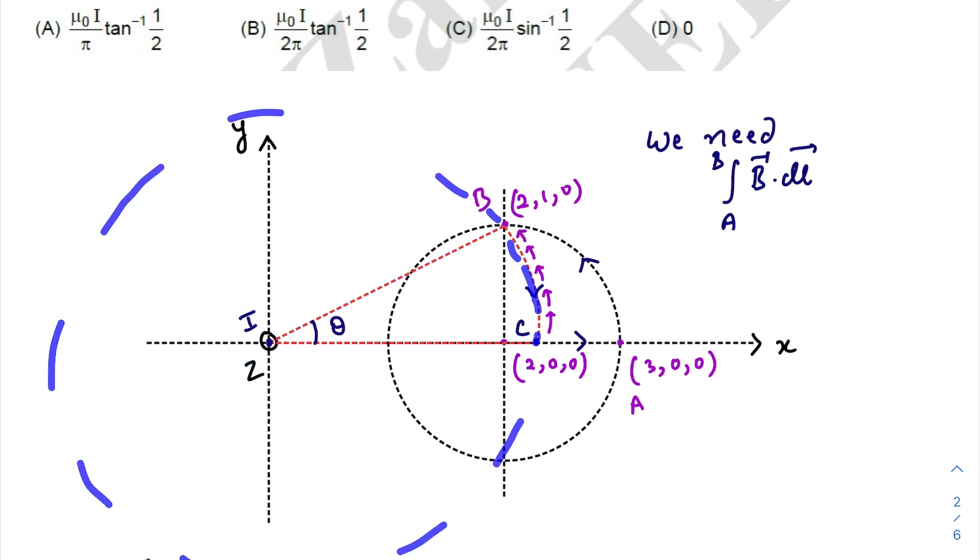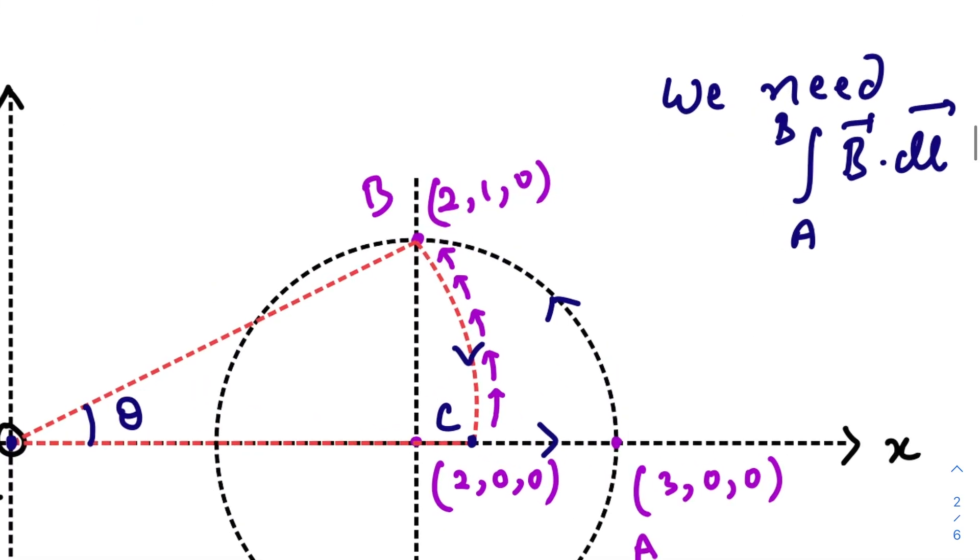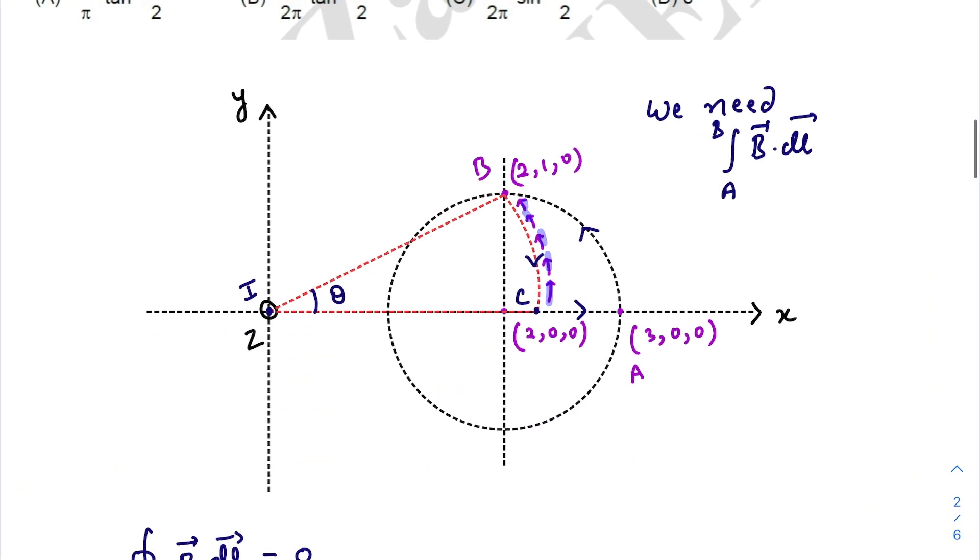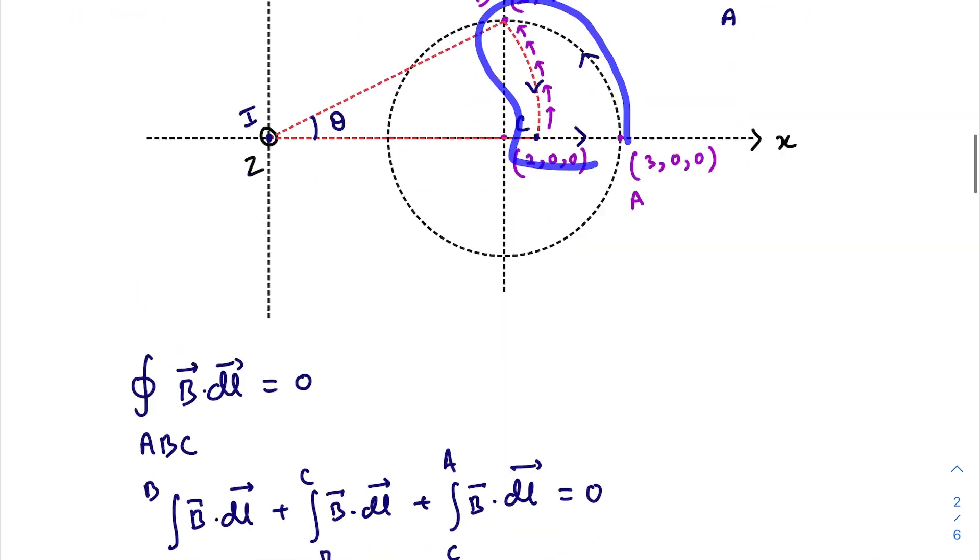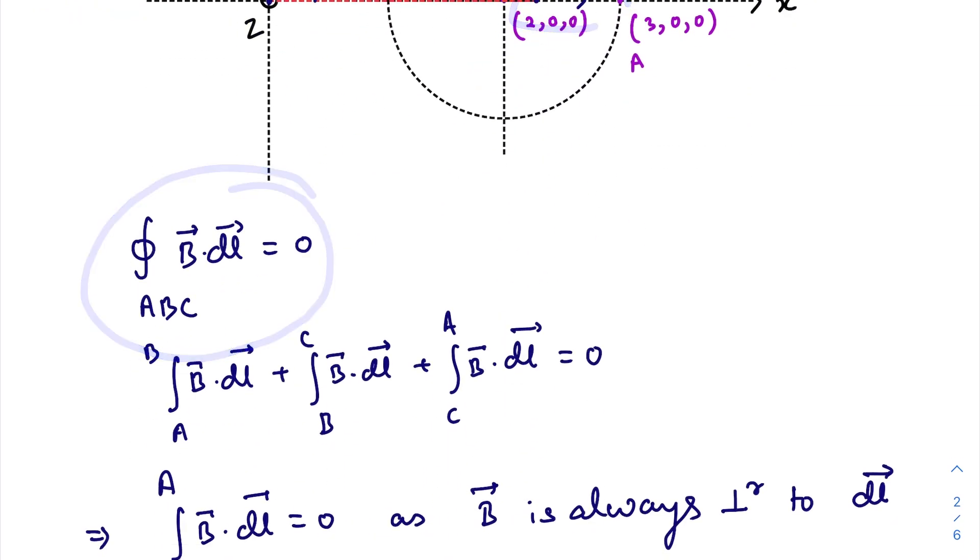This will help us for our question. Now this loop does not enclose any current, so according to Ampere's loop law, the closed line integral of B dot dl is zero because there is no current enclosed.